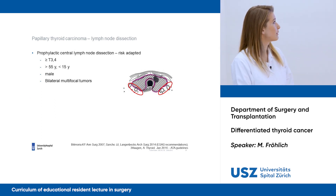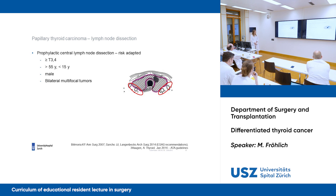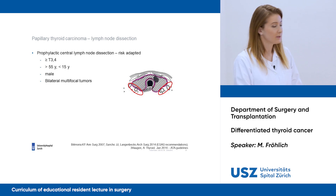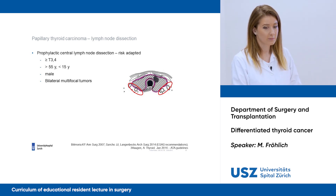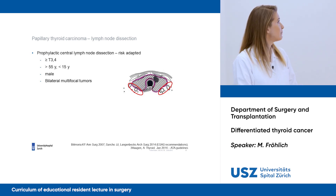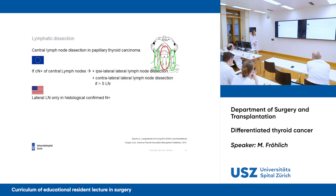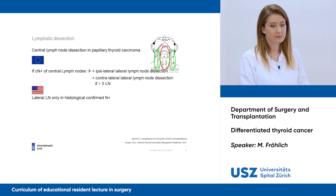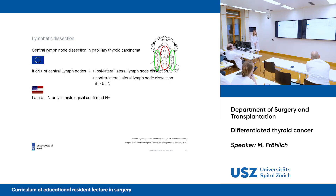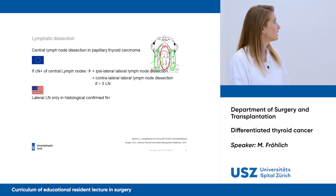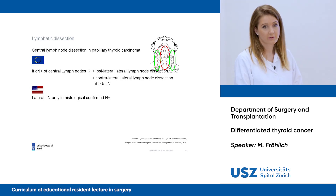Regarding lymph node dissection in papillary thyroid carcinoma: prophylactic dissection is not routinely indicated, but should be performed risk-adapted. For larger T3-T4 carcinomas with invasion, prophylactic lymph node dissection is recommended in patients older than 55 or younger than 15 years, in male patients, and if there are bilateral multifocal tumors. In papillary thyroid carcinoma with suspected cN-positive lymph node status, we should perform central lymphadenectomy. In Europe, ipsilateral and contralateral lateral lymphadenectomy is performed if there are more than five positive lymph nodes; in America, lateral lymphadenectomy requires histological confirmation.